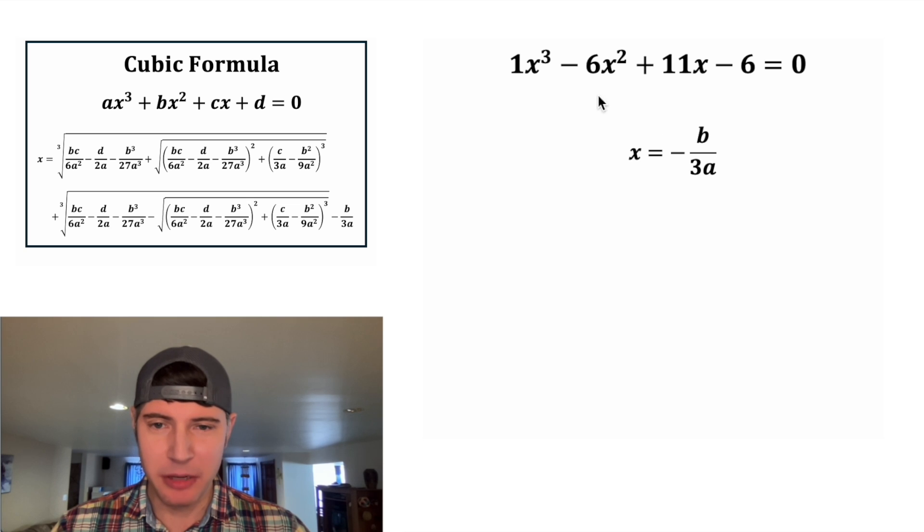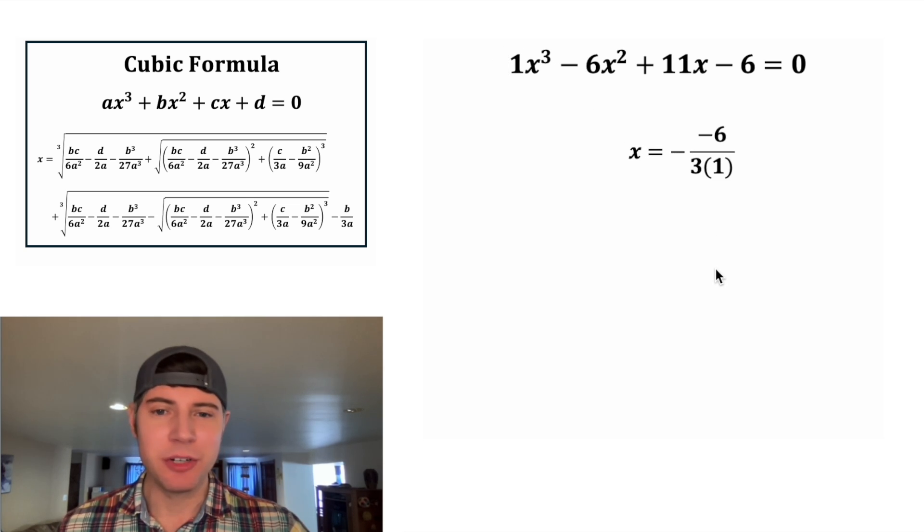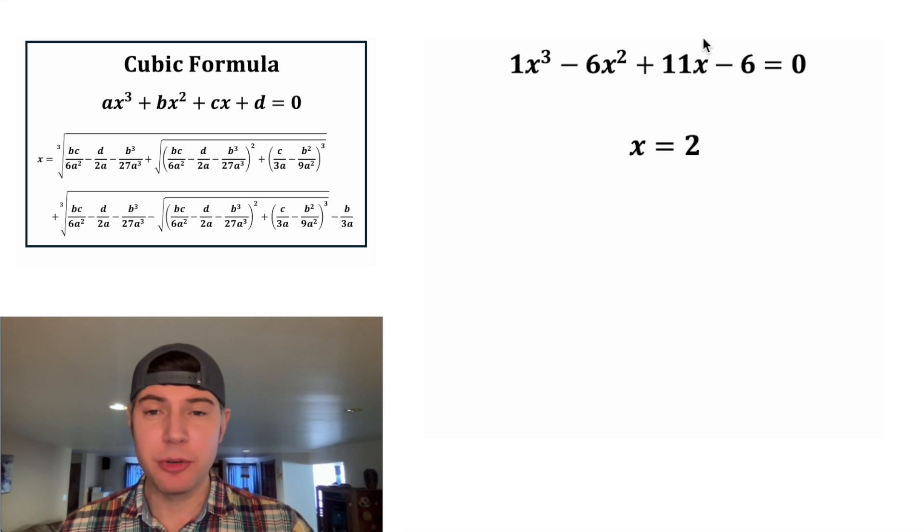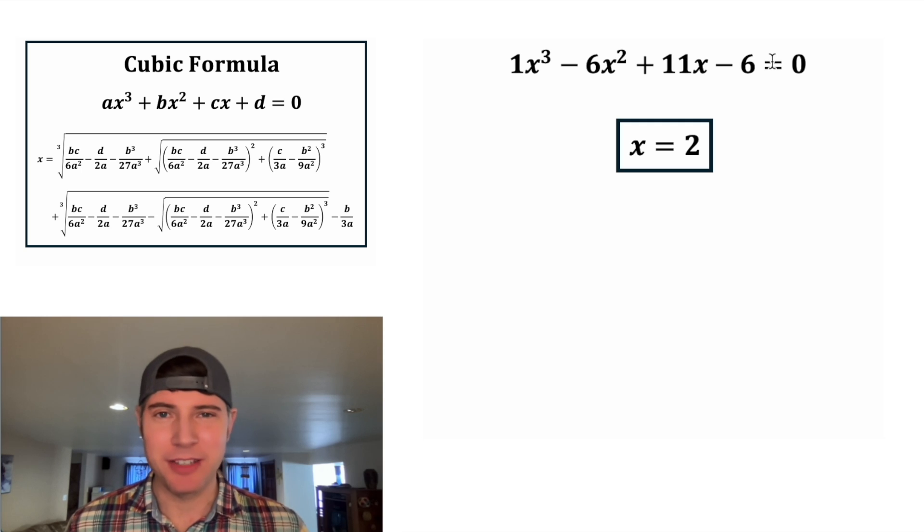So all we have left is x is equal to negative b over 3a. In the place of the b, we can plug in negative 6. And in the place of the a, we can plug in 1. 1 isn't doing anything. The negative times negative cancel each other out. And the 6 divided by 3 is equal to 2. And that answers our question. x equals 2 is the real solution that the cubic formula gave us. Let's put a box around it. I'm very curious to see how many people guess that.